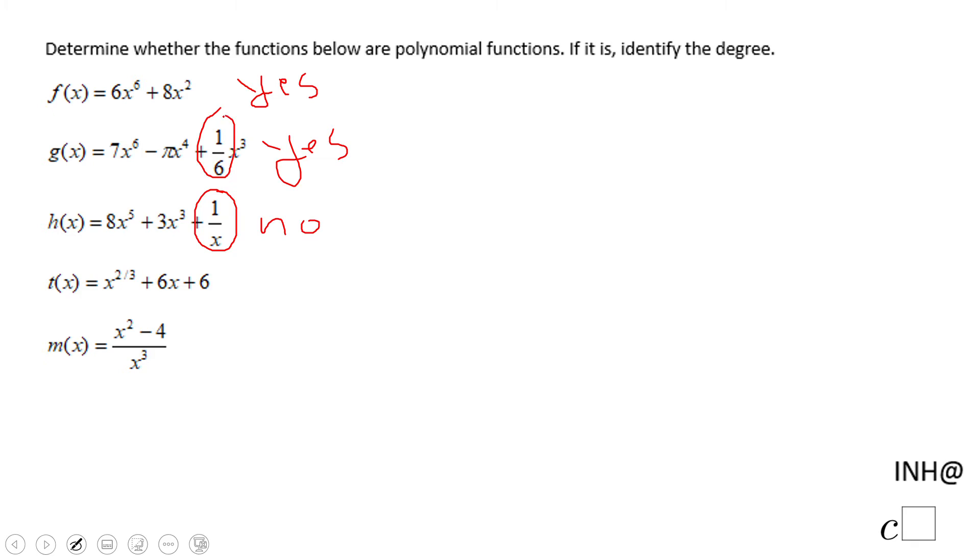On the other hand, you might say but this 1 over 6, that is a rational number, it doesn't really affect the polynomial function.